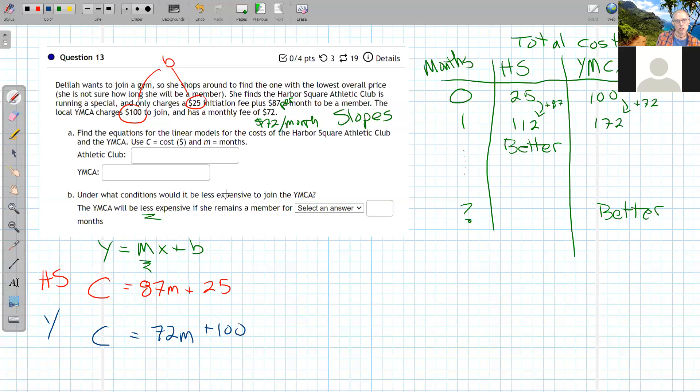Under what conditions would it be less expensive to join the YMCA? We're trying to see how many months have to go by before the YMCA is finally a better deal. We could make a table, adding $87 and $72 repeatedly to see where they change. A spreadsheet would be a great way to do that.